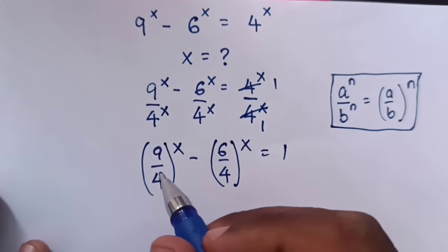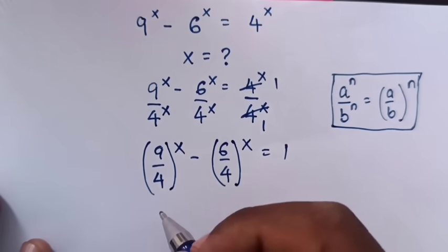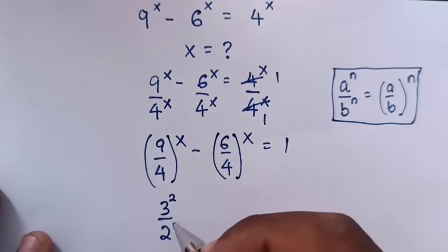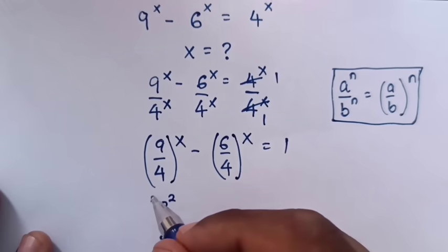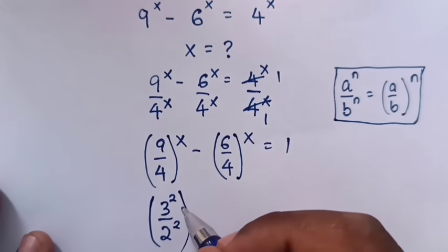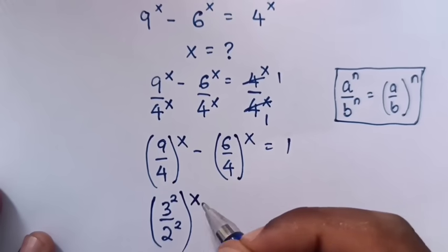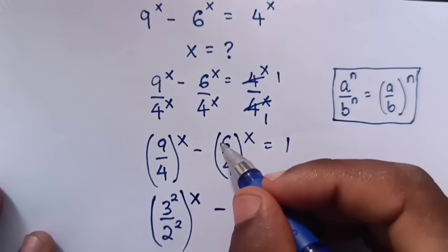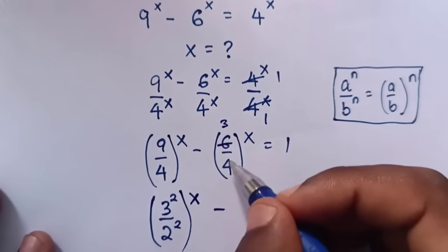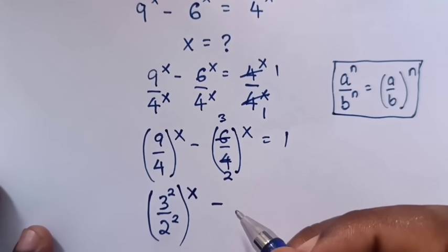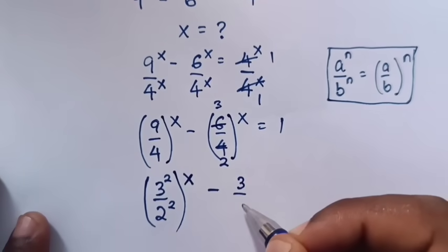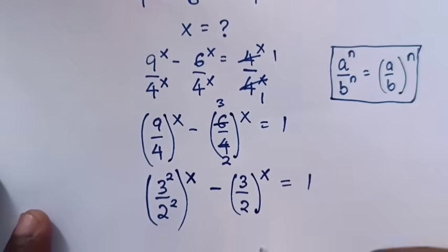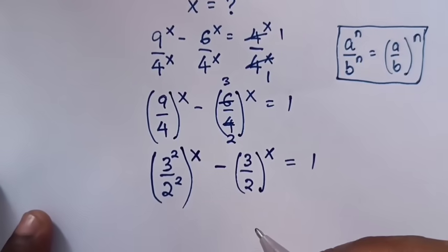Now, 9 is the same as 3 squared, and 4 is the same as 2 squared. We simplify 6 over 4: dividing numerator and denominator by 2 gives 3 over 2. So it will be (3 over 2) bracket power 2x minus (3 over 2) bracket power x is equals to 1.